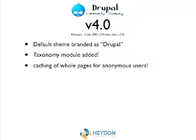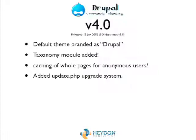Caching of pages — being able to scale sites was starting to become more important. We got the update system, the update.php, but at this stage it only worked with core. Contributed modules at that stage had to write their own update system and most people had hacked-up versions of update.php in their directories.